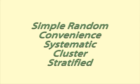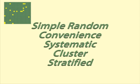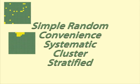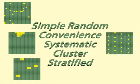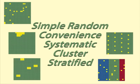This video presents five methods of sampling: simple random sampling, convenient sampling, systematic sampling, cluster sampling and stratified sampling. For each method, we will outline the process and the advantages and disadvantages.